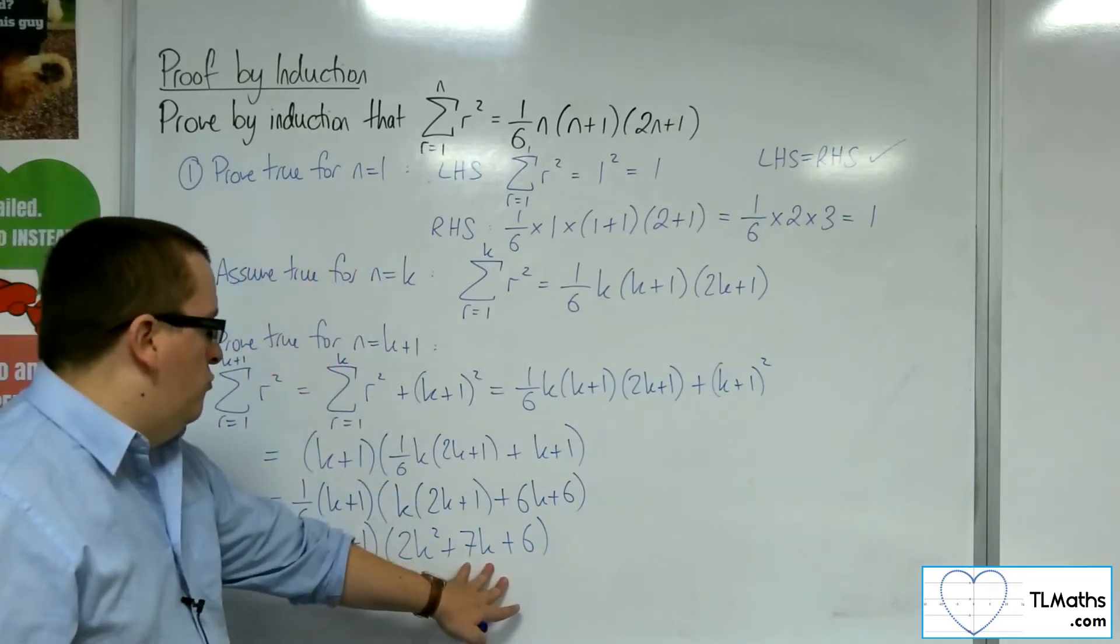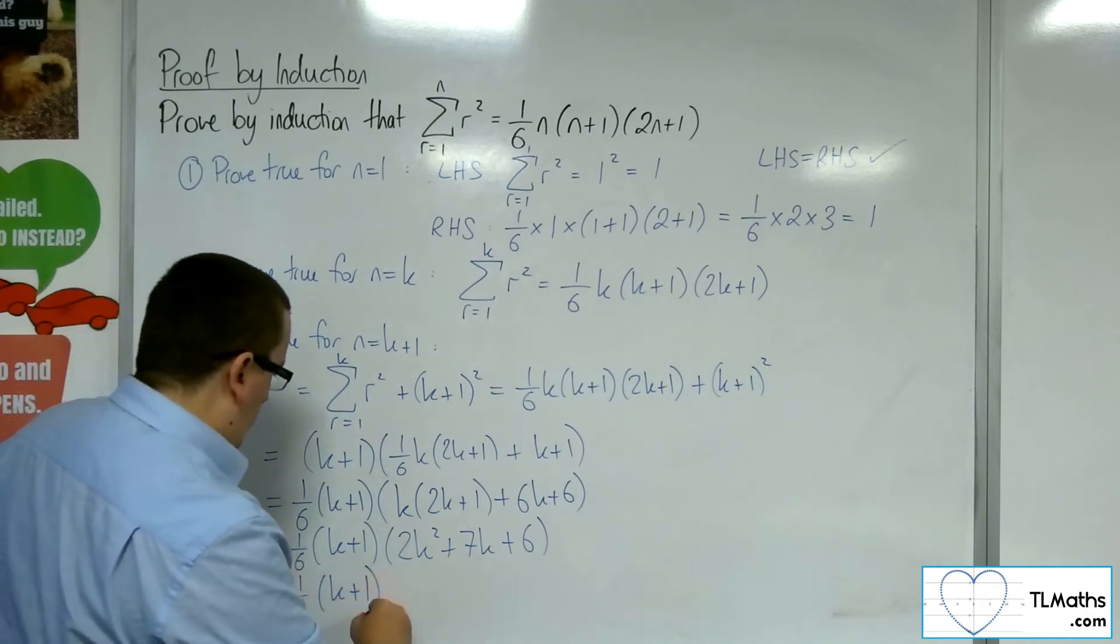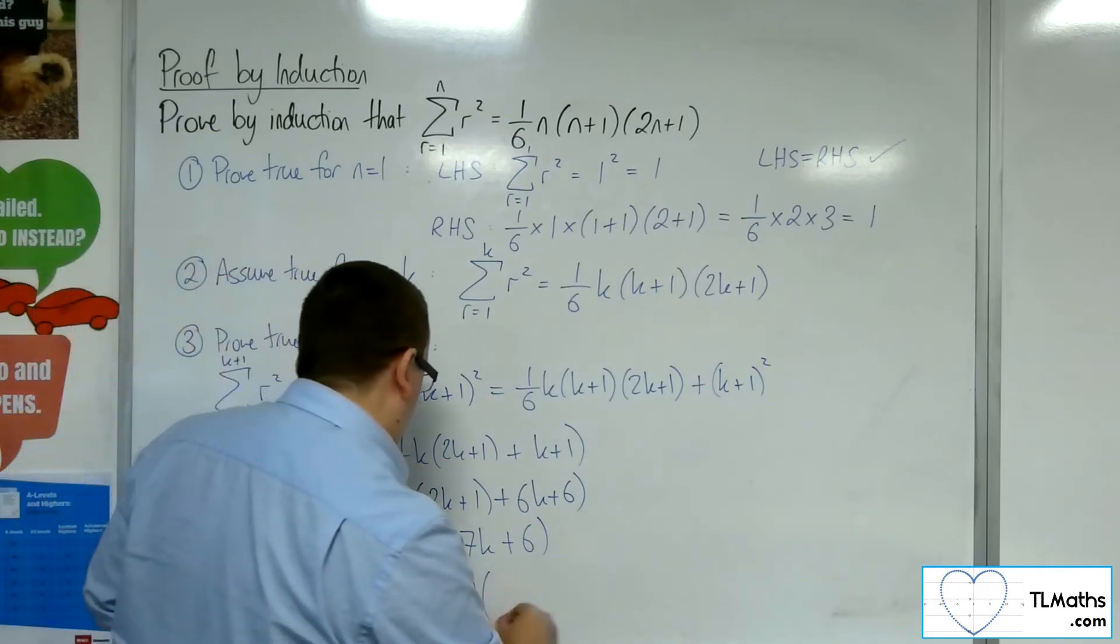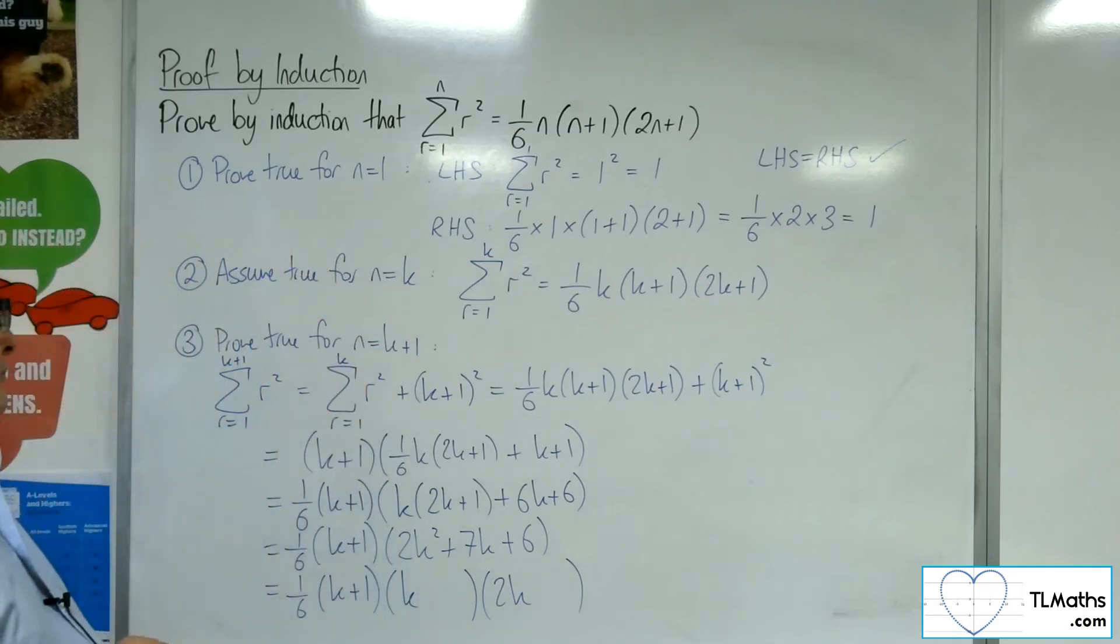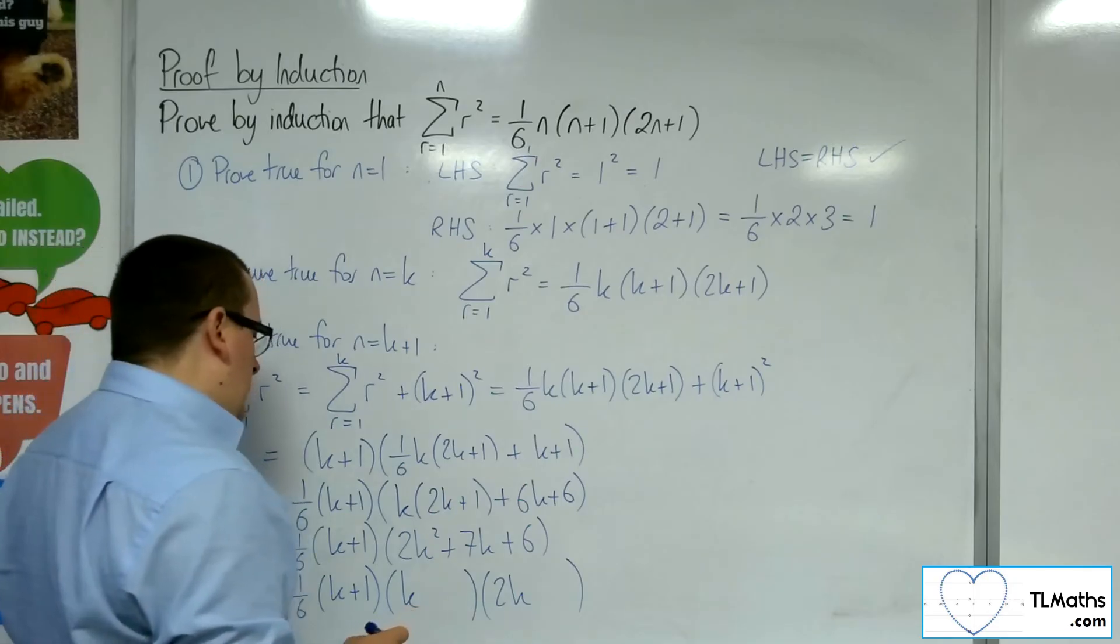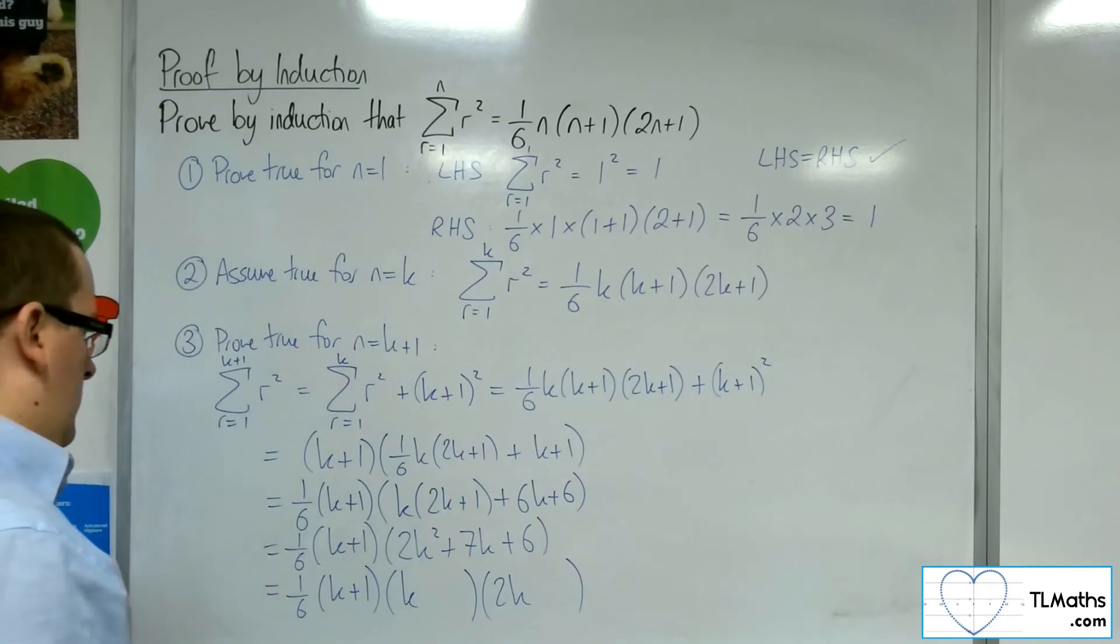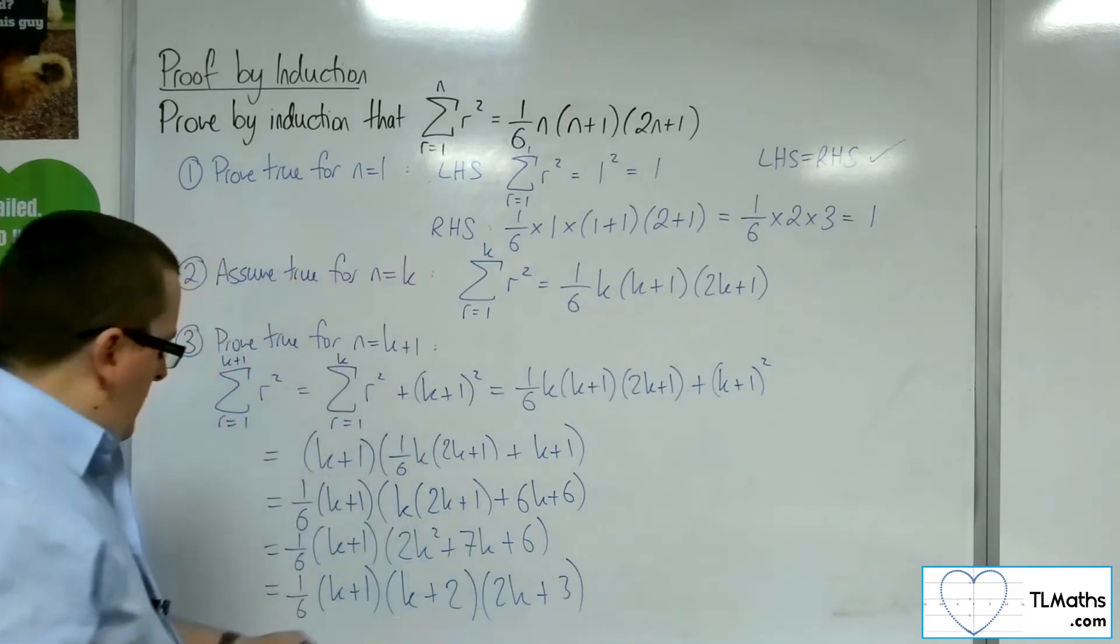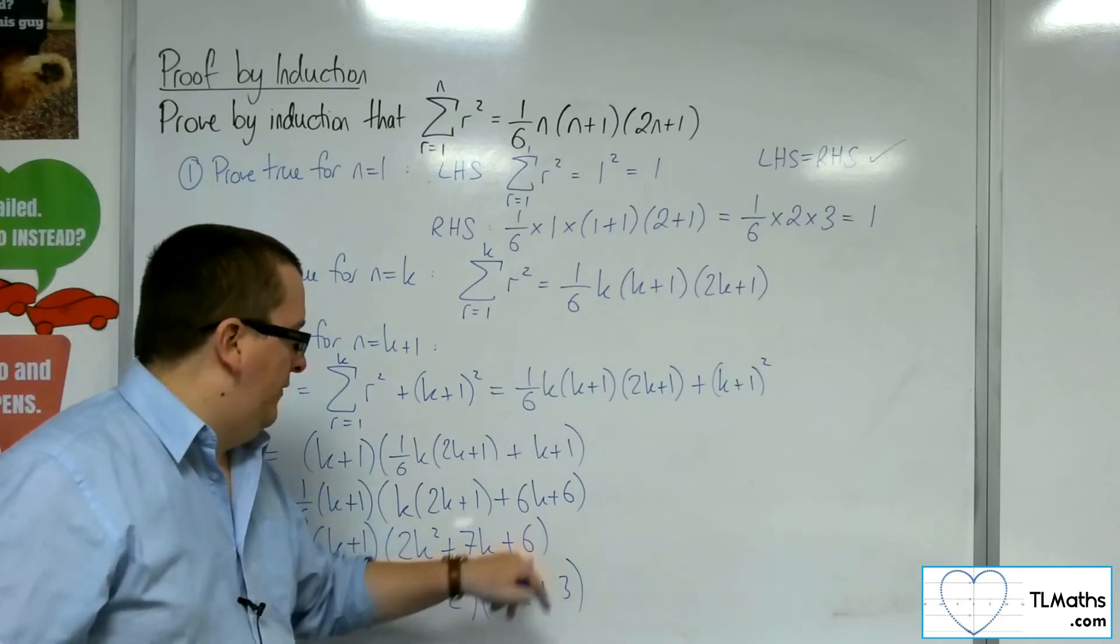So, I want to factorize that. Definitely going to have a 2k and a k. So, if I had a k plus 2 and a plus 3, I'm going to get 4k and a 3k, so 7k, 2 lots of 3 is 6. Yes.